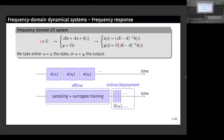We want to speed up the evaluation of this quantity. What we do in model reduction is: instead of evaluating u at every frequency directly, we spend time in an offline phase by sampling at some well-chosen frequencies and training a surrogate model. Then in the online or deployment phase, we use the surrogate model ũ instead of the high-fidelity one. If the surrogate is much faster to evaluate, we can save time.